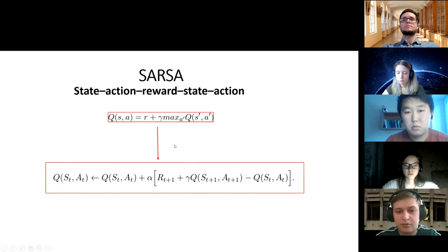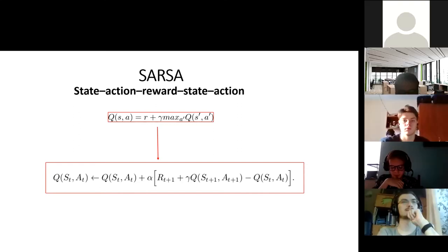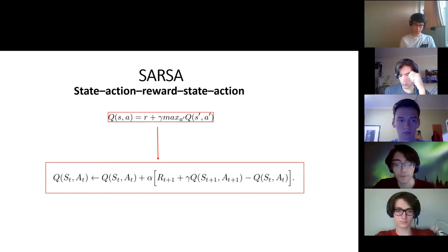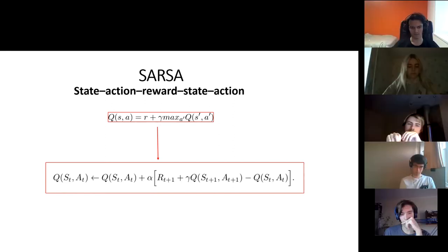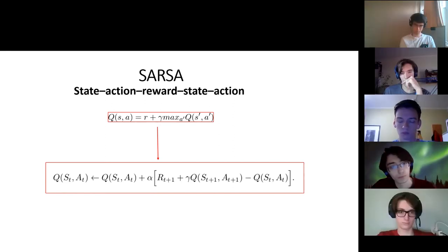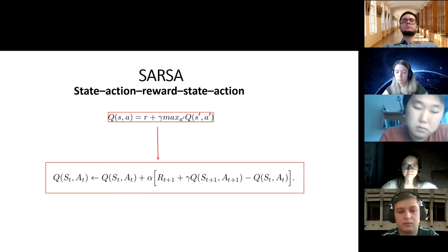Now, it's worth explaining what the alpha and gamma coefficients are responsible for. Alpha is the learning rate. It determines the extent to which the newly reserved information overlaps the old one. A factor of zero will make the agent learn nothing, and a factor of one will make the agent only consider the most recent information.